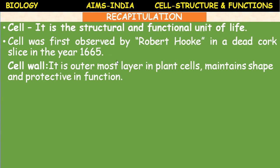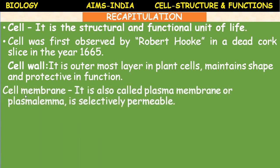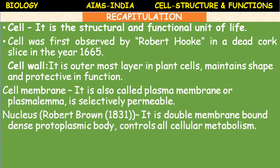The cell is composed of different organelles. The parts of the cell are called organelles, which are specific in structure and perform specific functions. Cell wall is the outermost layer in plant cells; it maintains shape and is protective in function, mainly composed of cellulose. Cell membrane is also called plasma membrane or plasmalemma. It is a lipoproteinaceous layer and is selectively permeable in nature.